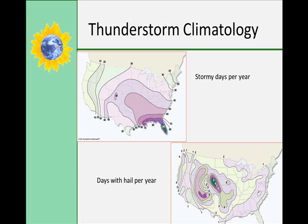The most severe thunderstorms occur in the Great Plains. The warm or unstable air is dry and shallow, and the ice crystals don't have time to melt, so that's why you get a large amount of hail per year.